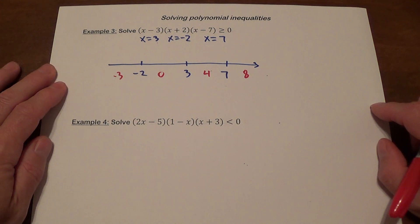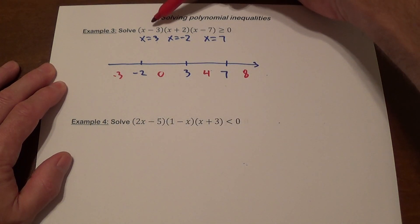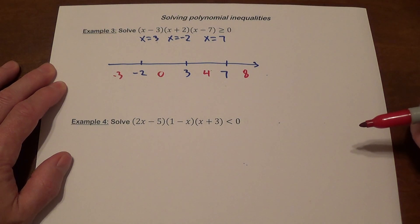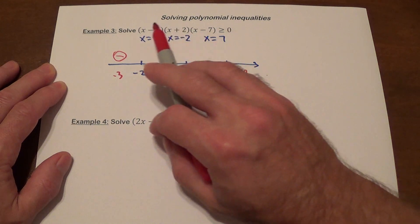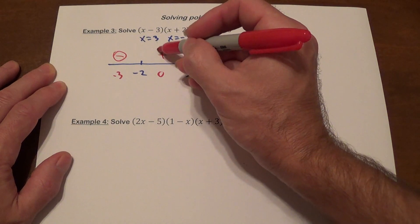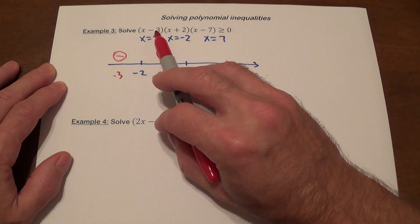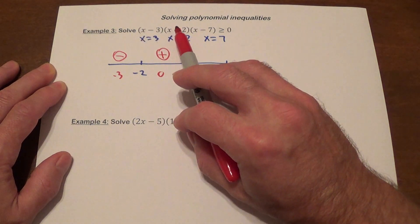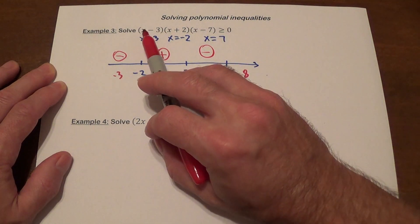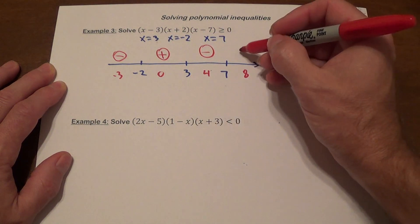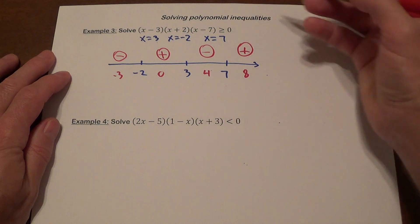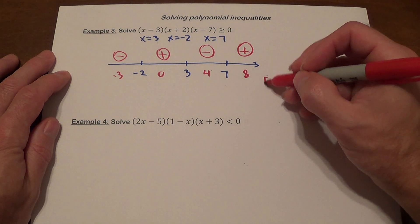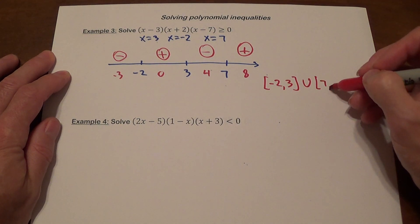With negative three: all three factors give negative — negative times negative times negative is negative. With zero: negative, positive, negative — negative times positive times negative is positive. With four: four minus three is positive, four plus two is positive, four minus seven is negative — positive times positive times negative is negative. With eight: all three factors positive — positive. The inequality is greater than or equal to zero, so we include boundary points. The answer is from negative two to three, union seven to infinity.